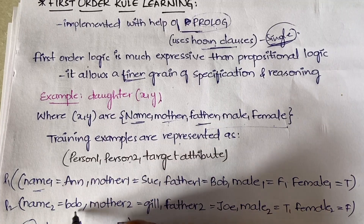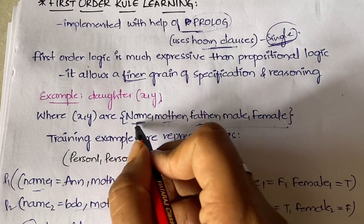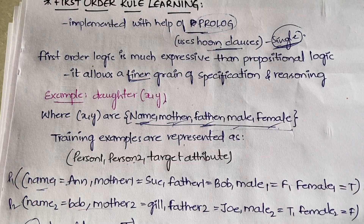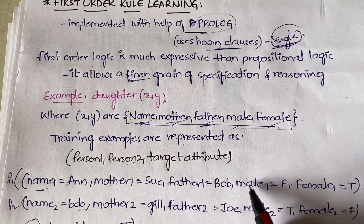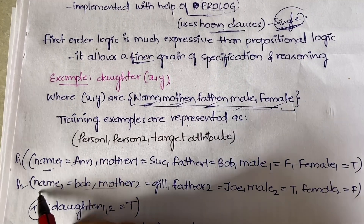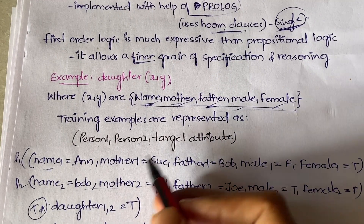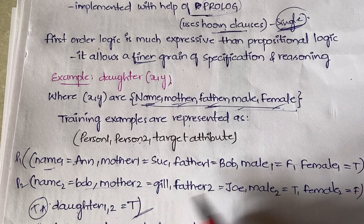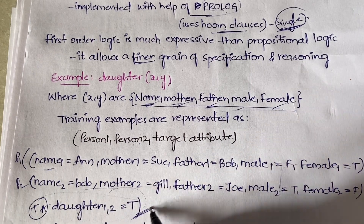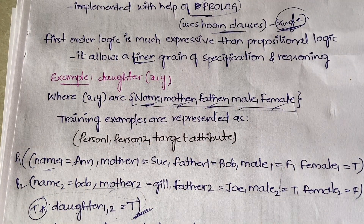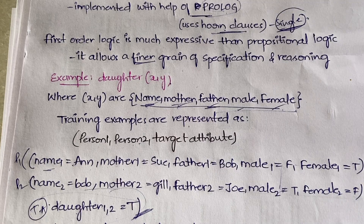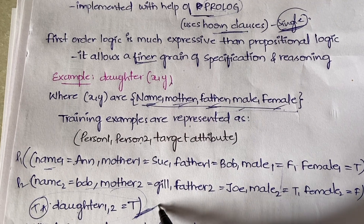You have person one, person two, and the target attribute, with attributes like name, mother, father, male, and female. In propositional logic, you write conditions like name1=value, mother1=value, father1=value, male1, female1, name2, and so on, and then daughter(1,2)=true. This is how propositional logic represents it — but with propositional logic you can only generalize a limited number of rules.